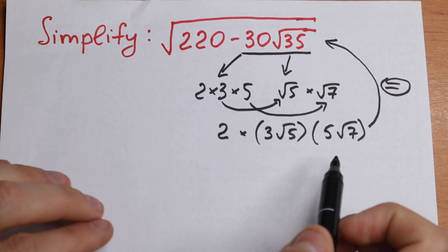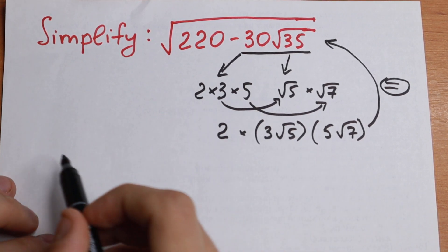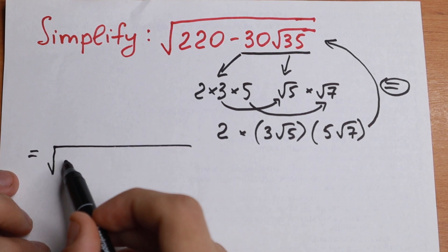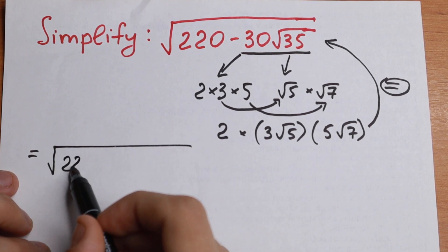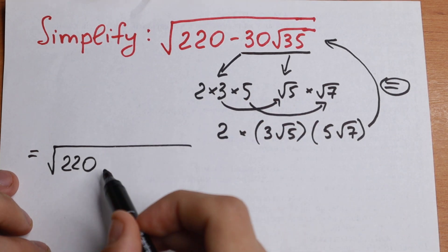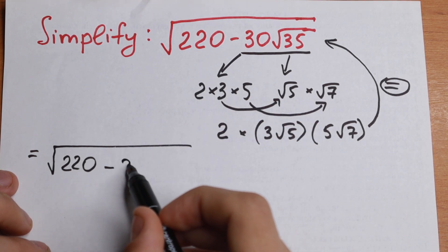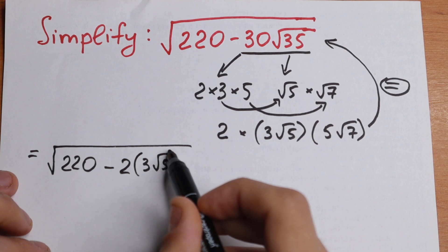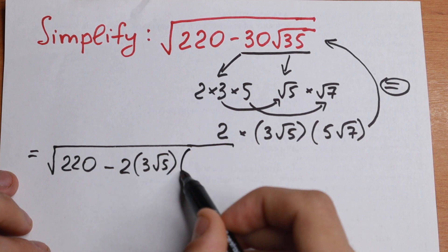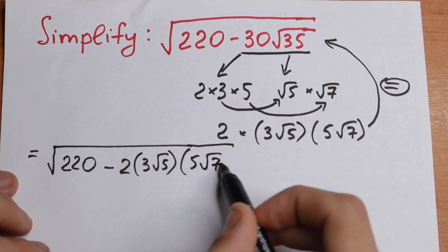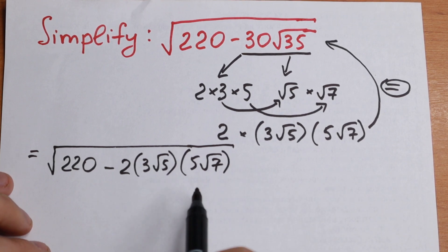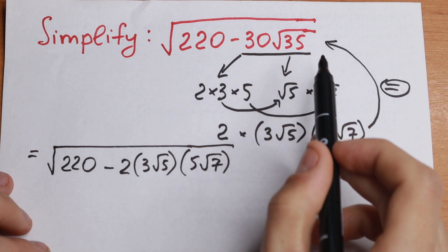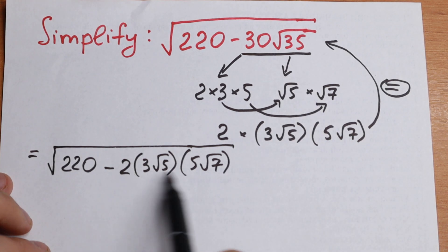But why do I write it this way? We can rewrite the full square root expression as the square root of 220 minus 2 times (3√5) times (5√7). I just rewrote 30 times the square root of 35 like that.